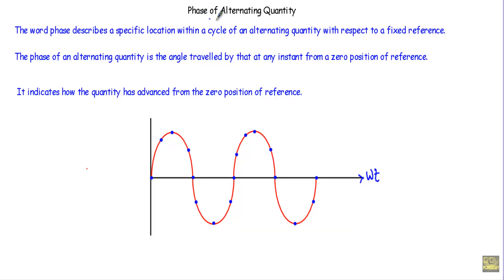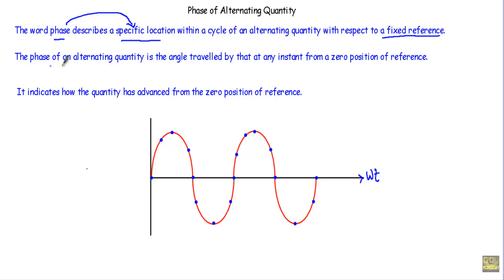In this video, I will talk about the phase of an alternating quantity. In the analysis of alternating quantities, it is always necessary to know the instantaneous value and the direction of the alternating quantity at any instant. To determine the instantaneous value and the direction, we define the term 'phase.' The phase describes a specific location within a cycle of an alternating quantity with respect to a fixed reference. The phase of an alternating quantity is the angle traveled by that alternating quantity at any instant from a zero position of reference.